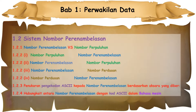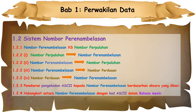1.2, System Nombor Perenamblasan. In this chapter, you will learn System Nombor Perenamblasan and System Nombor Perpuluhan, the conversion between Nombor Perenamblasan and Nombor Perpuluhan, and also the conversion between Nombor Perenamblasan and Nombor Perduaan. After that, you will learn pengkodan ASCII to Nombor Perenamblasan based on the given Aksara, and the relationship between Nombor Perenamblasan and Code ASCII in Bahasa Machine.